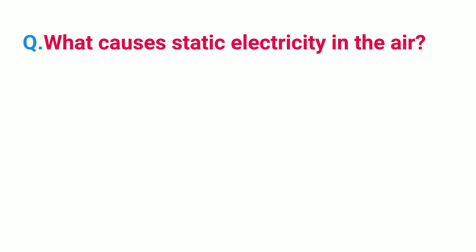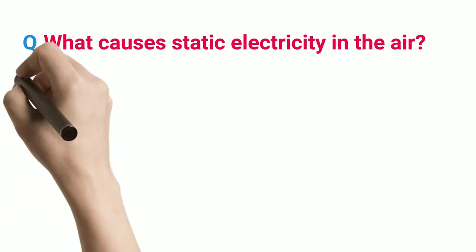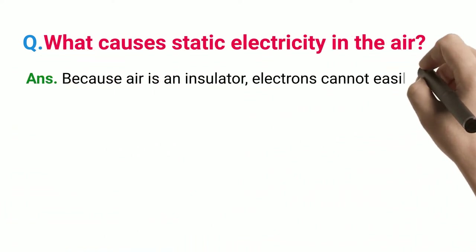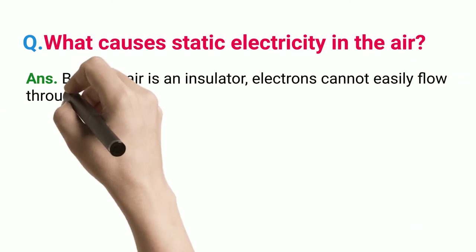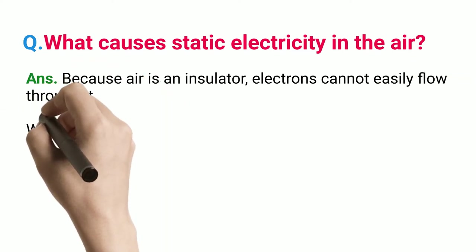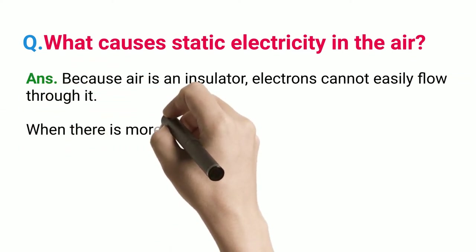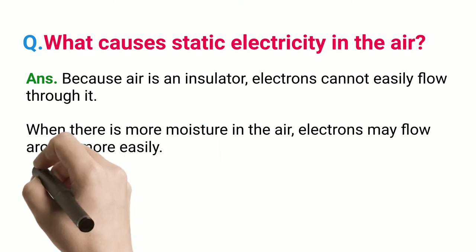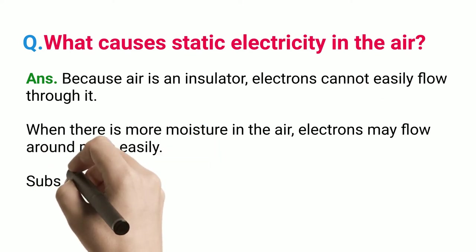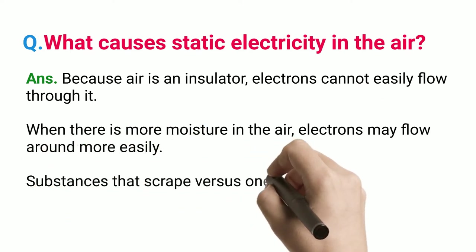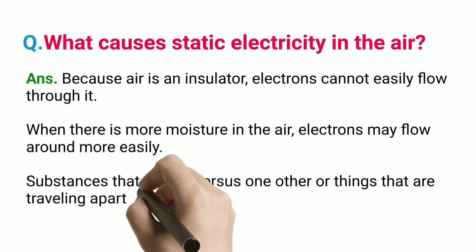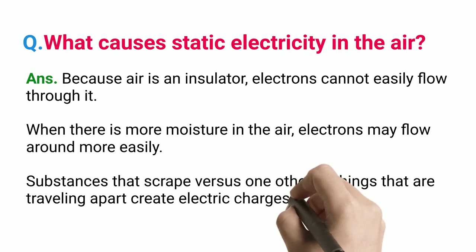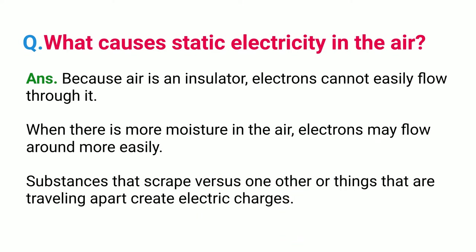What causes static electricity in the air? Because air is an insulator, electrons cannot easily flow through it. When there is more moisture in the air, electrons may flow around more easily. Substances that scrape versus one other or things that are traveling apart create electric charges.